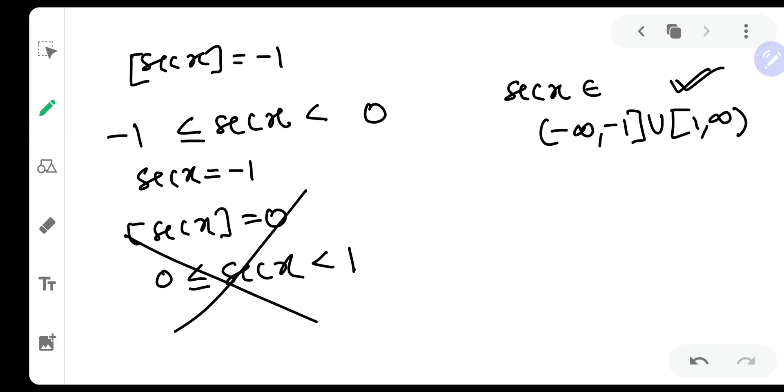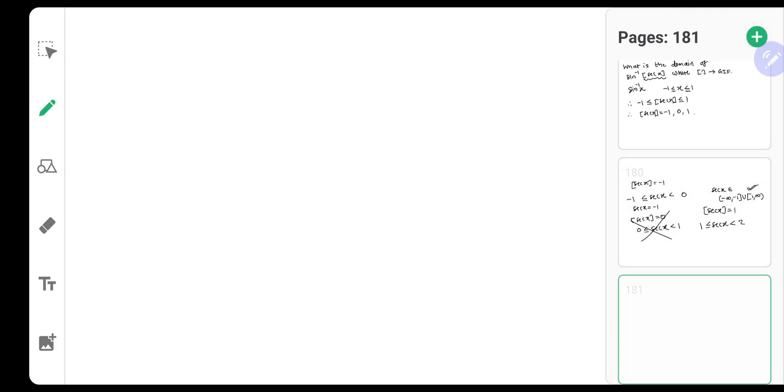Very well, then we have one more thing where sec x GIF should be equal to one. So for this, sec x has to be equal to one or lesser than two. Now this totally lies in the range of sec x, so let us calculate this: sec x one to two.